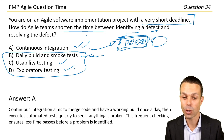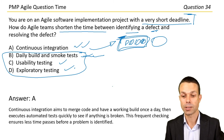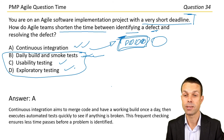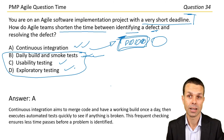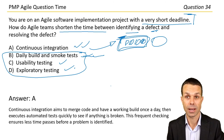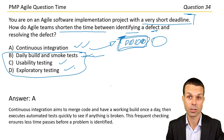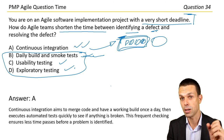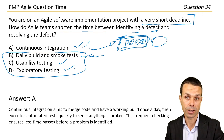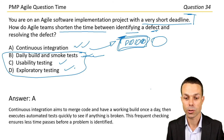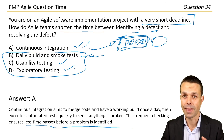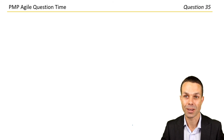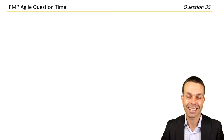Answer A: continuous integration aims to merge the code and have a working build at least once a day, then executes automated tests quickly to see if anything is broken. It's an advanced practice and can be challenging to manage, but it's one of the best methods for identifying defects very quickly. This frequent checking ensures less time passes before a problem is identified.